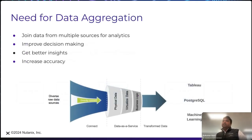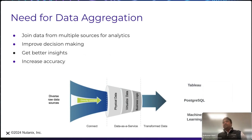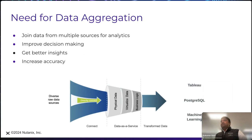Why do we need data aggregation between these data sources? We have finance or accounts data in one system, and logs or pulse data of those systems in different data sources. That is the main reason why we want data aggregation — to build data-driven analytics and decisions on top of that. This gives us improved decision making with better insights, and it also increases the accuracy of our data-driven decisions so that we can plan our future activities accordingly.